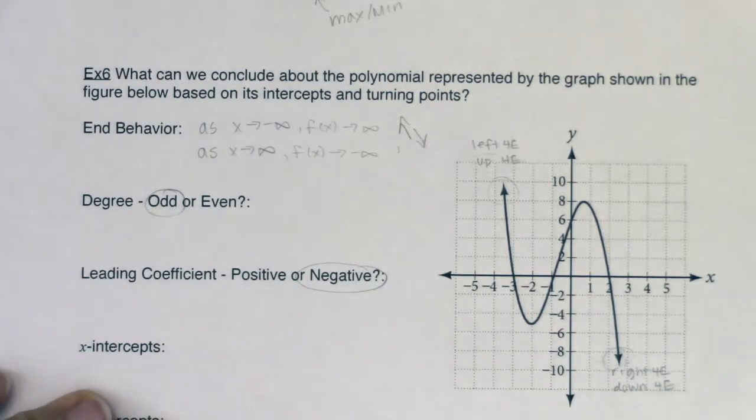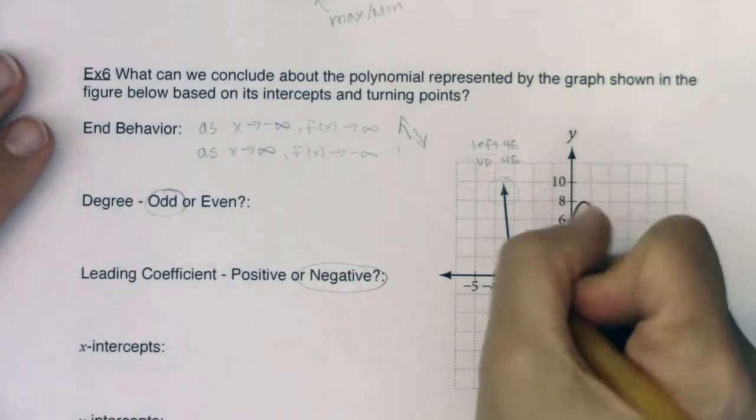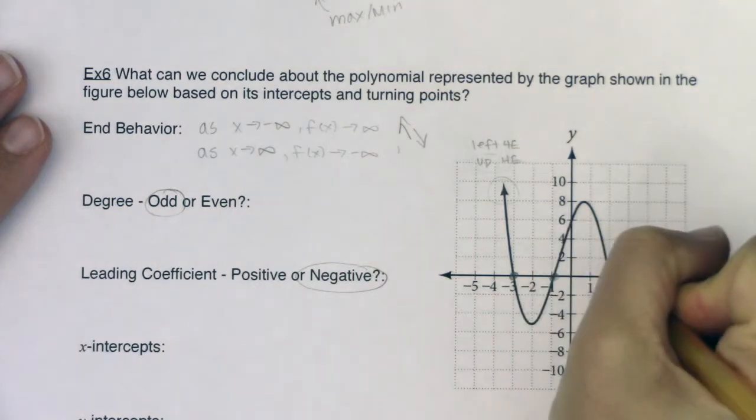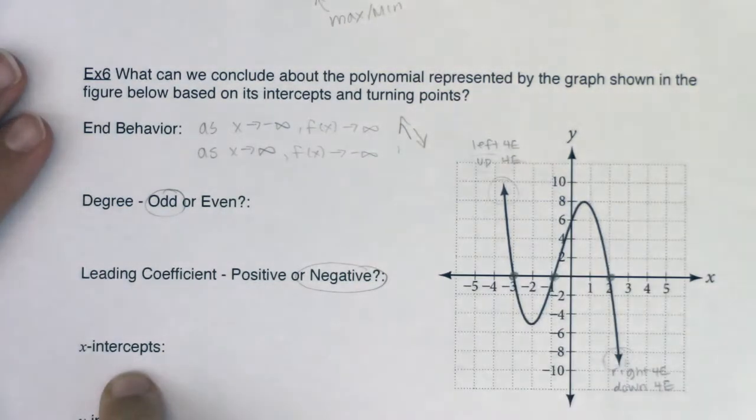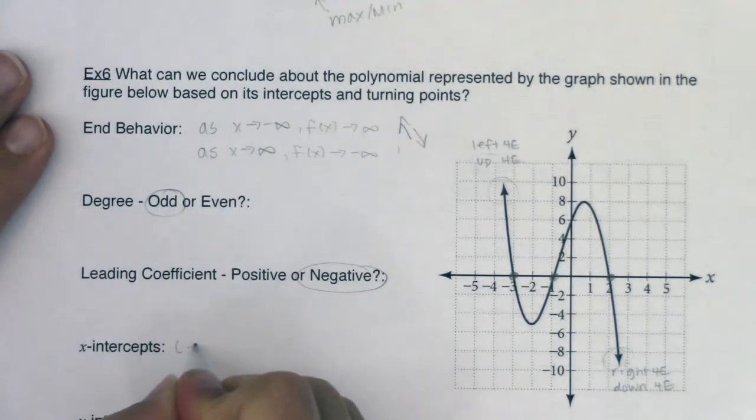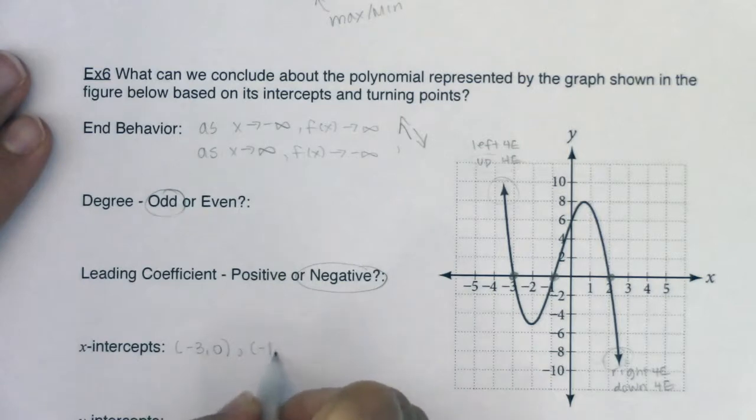And then taking a look, x-intercepts, well, how many do I have? I see one of them here, one of them here, one of them here. Now, x-intercepts are ordered pairs, so you owe me an x and a y-coordinate, but I have three. I have one at negative 3, 0, negative 1, 0, and it looks like 2, 0.